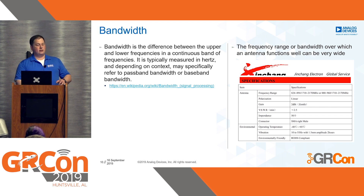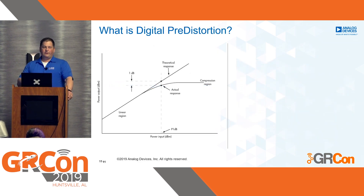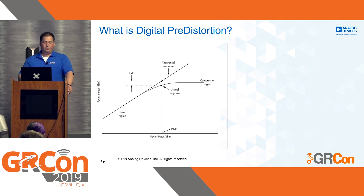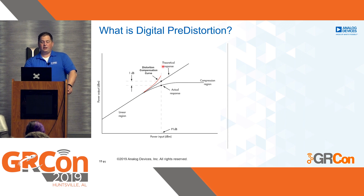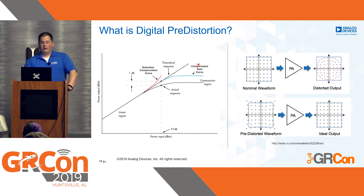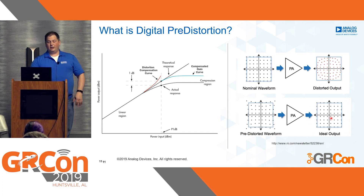This is a typical amplifier characteristic between power input and power output in dBm — relative to a milliwatt. As power increases on the input side, eventually we saturate. This knee is called the 1 dB compression point. If we pre-distort our signal — push it up the other way — the overall signal gets to be higher power and stays in the linear region. From a digital comms perspective, without pre-distortion symbols look distorted; with pre-distortion the output becomes ideal. That's the concept of digital pre-distortion at a high level.